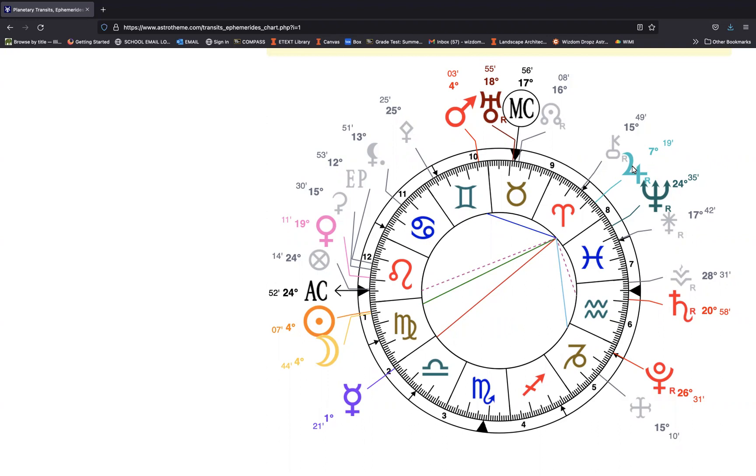We also have, with a much tighter three-degree orb, this conversation with Mars, which is harmonious because that blue line indicates a trine. You can see a trine between Mercury and Mars at the time of this new moon in Virgo.